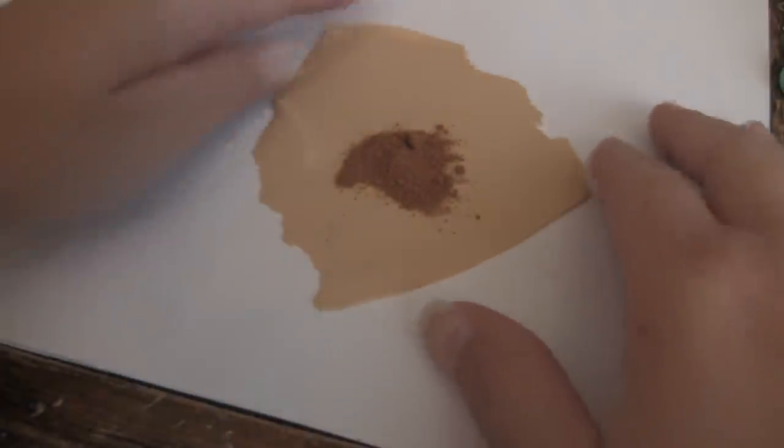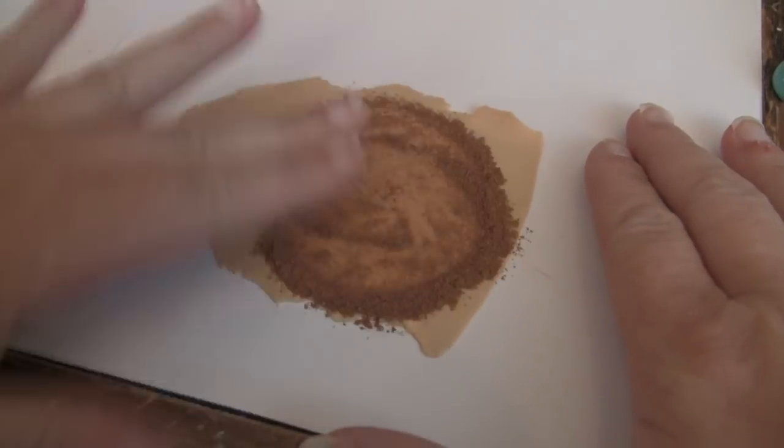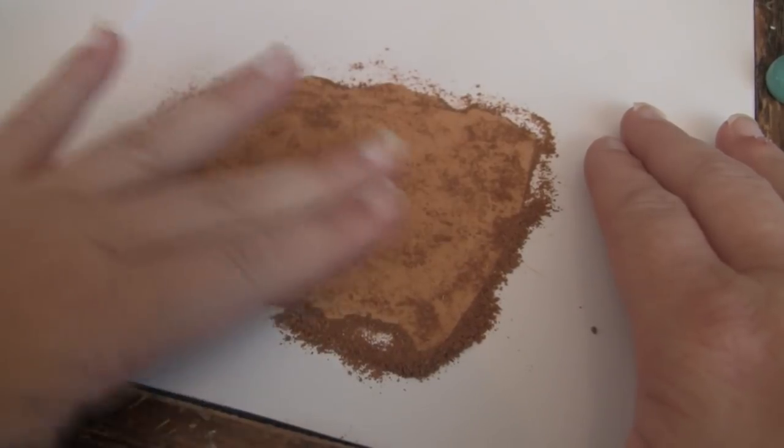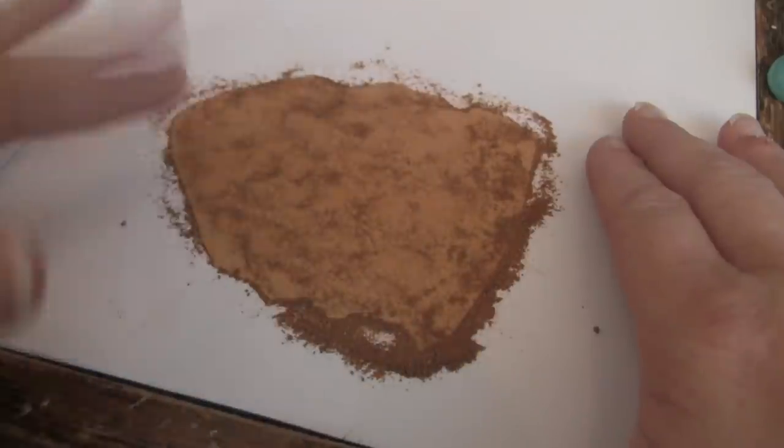I'm using ecru, rolled it out real thin, and I'm going to use some pumpkin pie spice on our ecru. It's only going to be on the one side, and I'm going to make sure I leave some on the surface there.